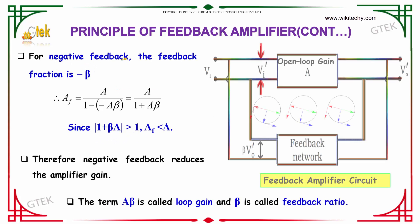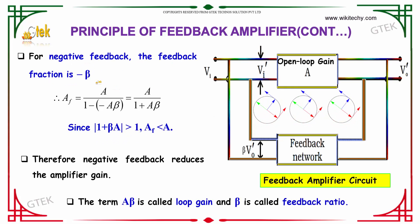For negative feedback, the feedback fraction is -β, so AF equals A divided by 1 minus (-βA), which is A/(1 + Aβ). Since 1 + βA is greater than 1, AF is less than A.